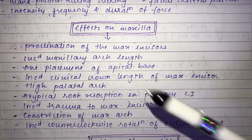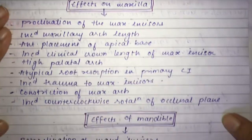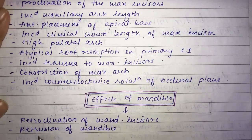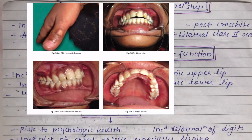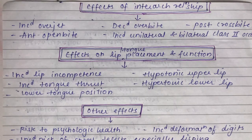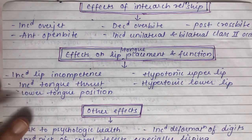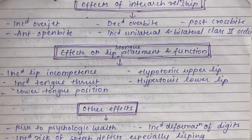Effects on the mandible include retroclination of the mandibular incisors and retrusion of the mandible. In terms of interarch relationships, there is increased overjet, anterior open bite, decreased overbite, posterior crossbite, and increased unilateral or bilateral Class II occlusion. The increased overjet is due to proclination of the maxillary anteriors.